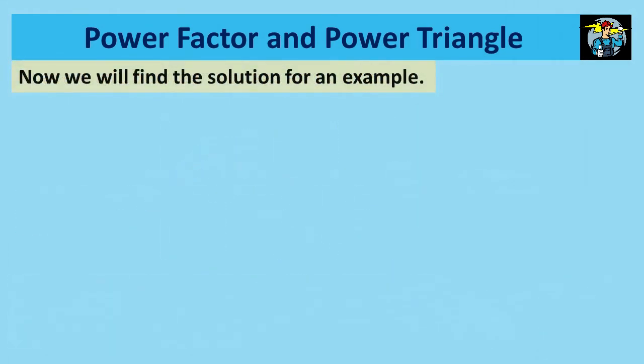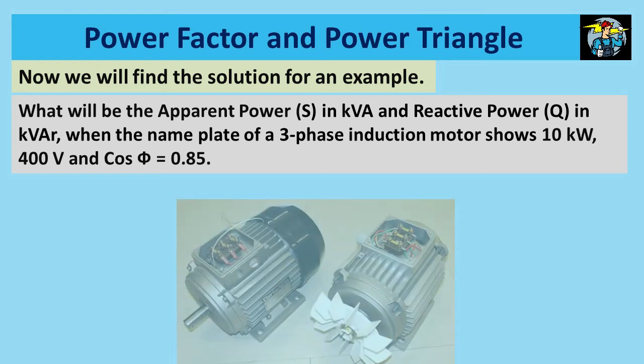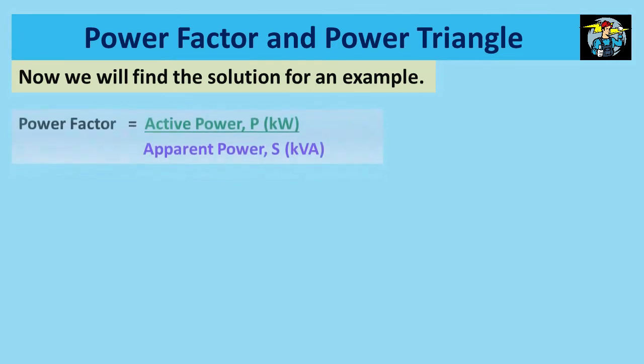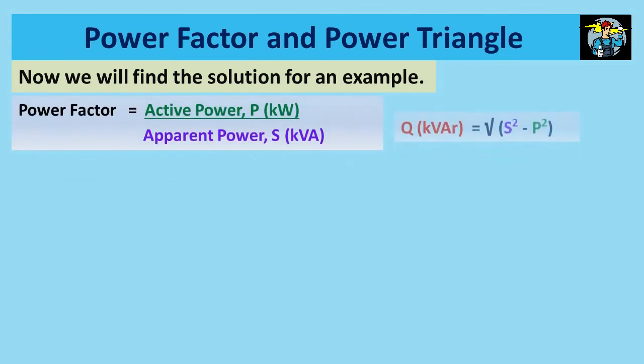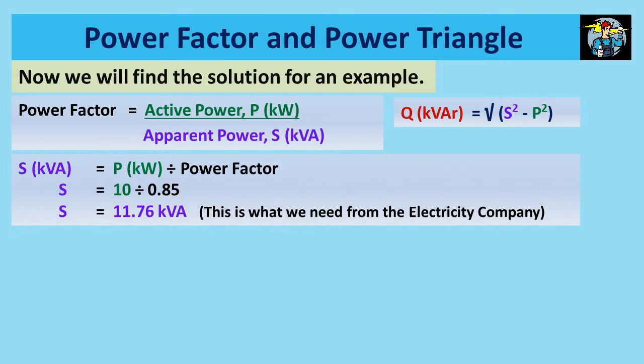Now we will find the solution for an example. What will be the apparent power S in kVA and reactive power Q in kVAr, when the nameplate of a three phase induction motor shows 10 kW, 400V and cos phi equals 0.85? These are the two equations to be used here. Power factor equals active power divided by apparent power. When we rearrange to get apparent power to the left side, it equals active power divided by power factor.